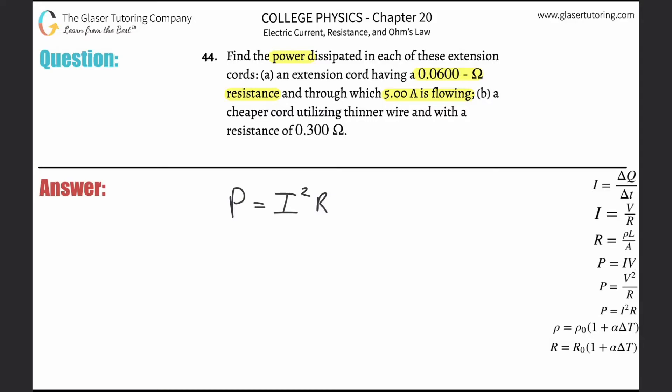The current here they told us is 5 amps squared, now multiply that by the resistance of 0.06. So the power dissipated: 5 squared times 0.06 works out to be 1.5 watts - 1.50 watts.